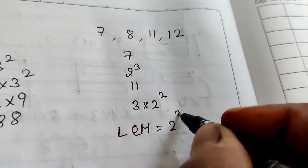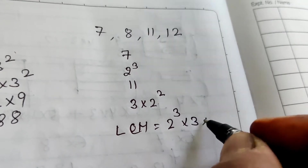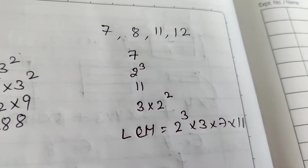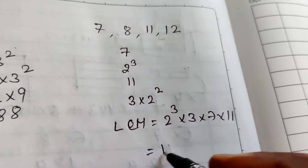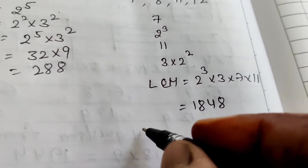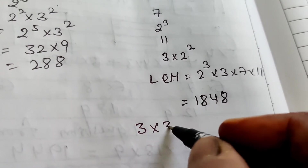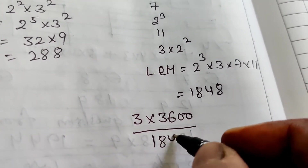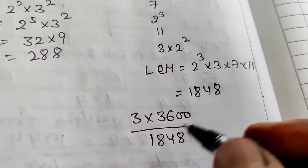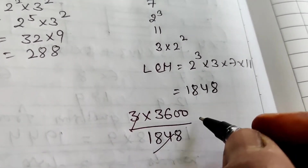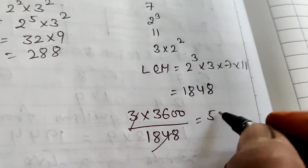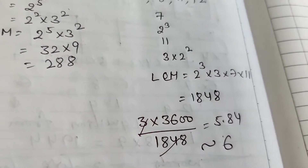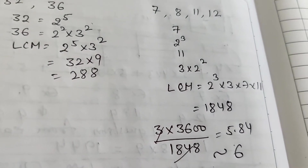LCM = 2³ × 3 × 7 × 11. Multiplying all these gives 1848. In 3 hours, number of seconds = 3 × 3600 = 10800. Dividing 10800 by 1848 gives approximately 5.84, which rounds to 6 times.